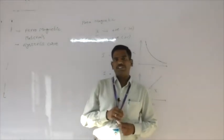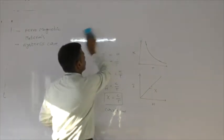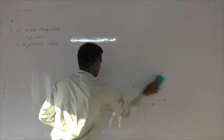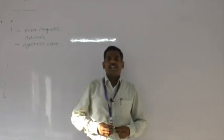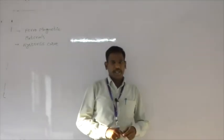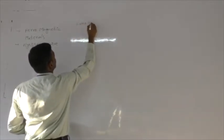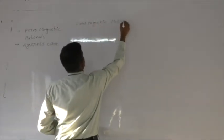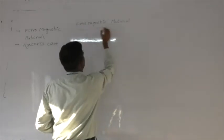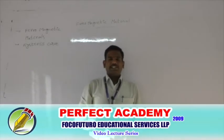Now let us look at the last and most important kind of magnetic material: ferromagnetic material. Ferromagnetic materials are magnetic materials which induce a large amount of magnetic field when kept inside an external magnetic field, attaining a large amount of magnetic property.